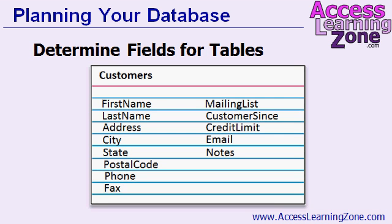Now that you've got an index card for all of the tables you want in your database, go through each table and write down a list of the different types of fields you'd like to have in each table. Remember, each specific item of information is considered a field. If you were putting this into an Excel spreadsheet, a field would be a column of data. For example, I have basic information about my customer: first name, last name, address, city, state, zip code or postal code, phone number, and fax number.